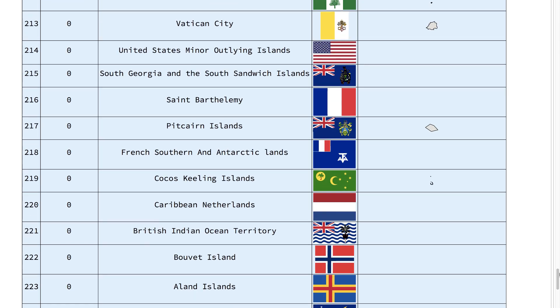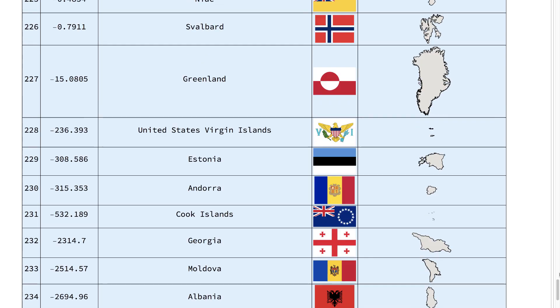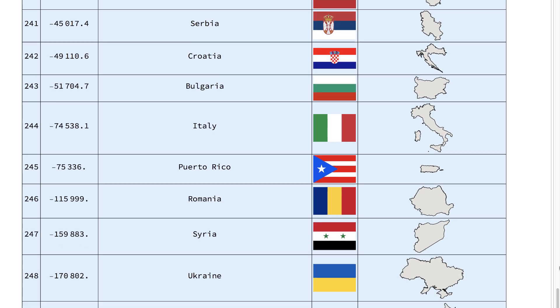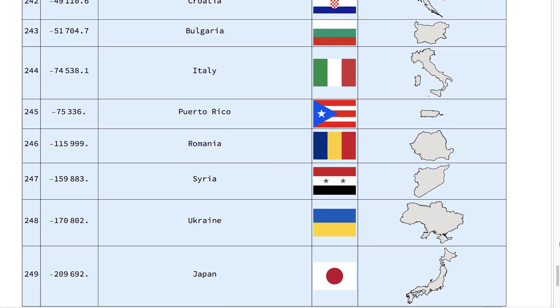A lot of tiny nations have no population growth. More interesting is the bottom of the list, where Japan, Ukraine, and Romania have rapidly aging populations, and Syria deals with civil war.